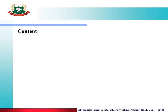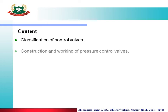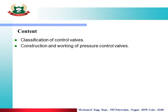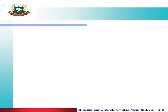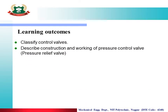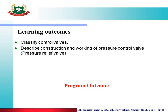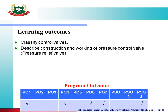Content of this lecture: Classification of Control Valves, and Construction and Working of Pressure Control Valves. Learning Outcomes: After completion of this lecture, you will be able to classify control valves and describe the construction and working of Pressure Control Valve as a Pressure Relief Valve. Program Outcomes mapped by this lecture are PO1 to PO7 and PO1 to PO3.